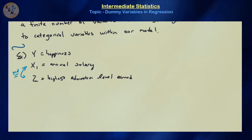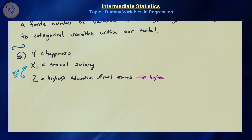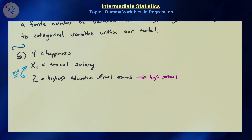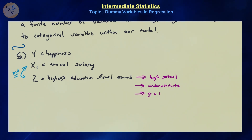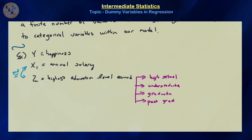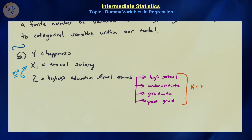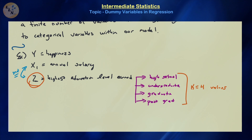Let's assume we can break this categorical variable z into four different states: high school, undergraduate degree (like a bachelor's or associate's), graduate degree (like a master's or PhD), and postgraduate work. So we have k equals four values for which this variable z can take, but they are not numerical — they are categorical.